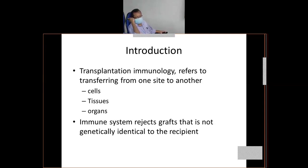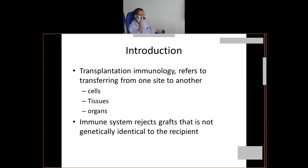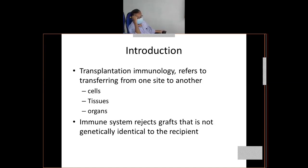It can be a tissue also, like skin graft, where skin is used as a graft. Sometimes it may be an organ — as you know, kidney, liver — all these things come under organ transplant. So it can be a cell, a tissue, or an organ.